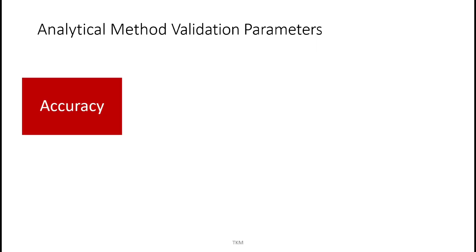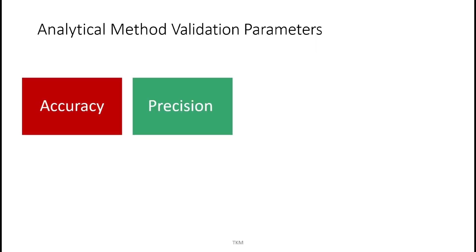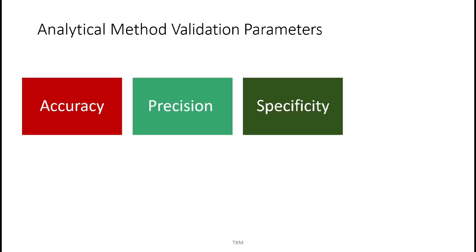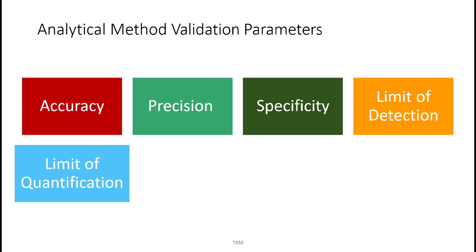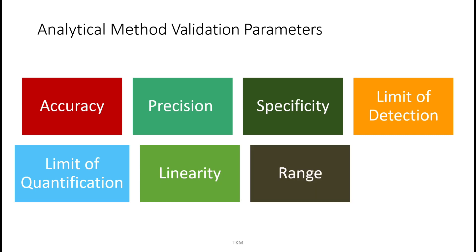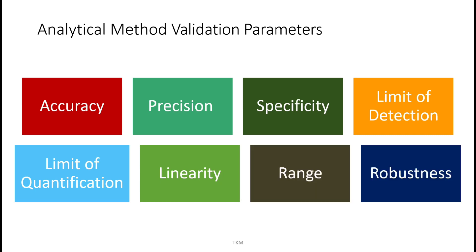Those parameters are: accuracy, precision, specificity, LOD (limit of detection), LOQ (limit of quantification), linearity, range, and robustness. These are the key parameters involved in analytical method validation.